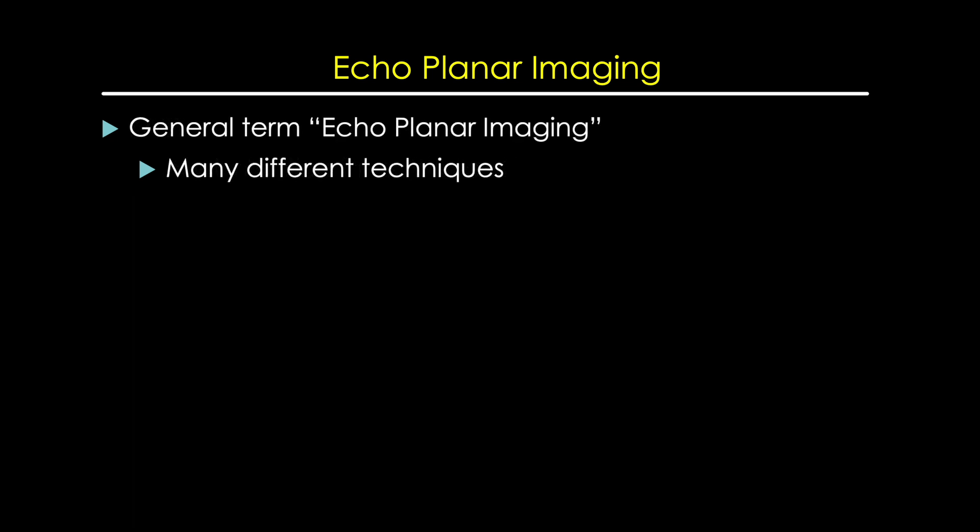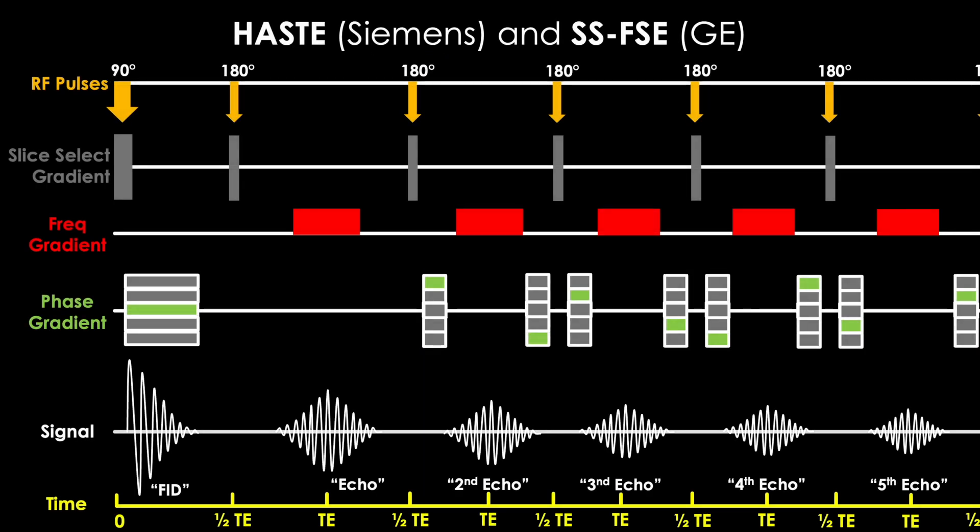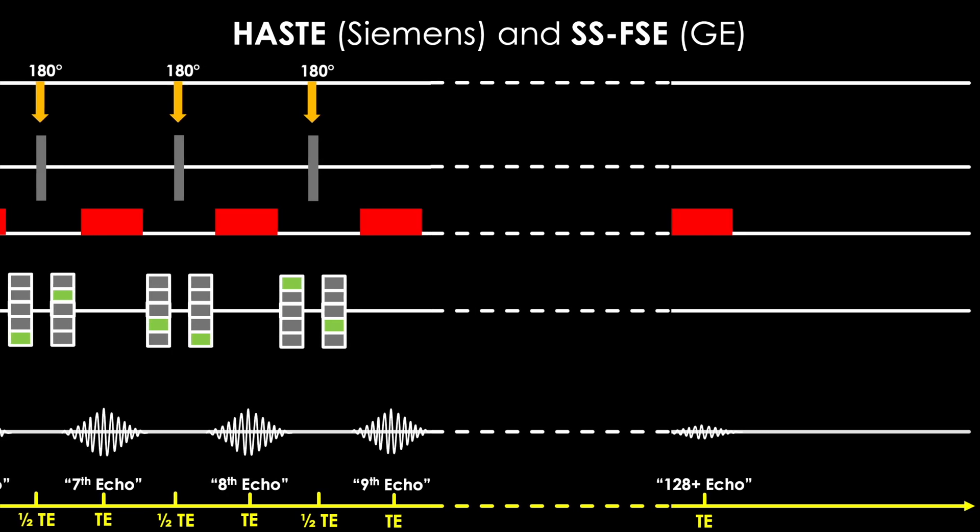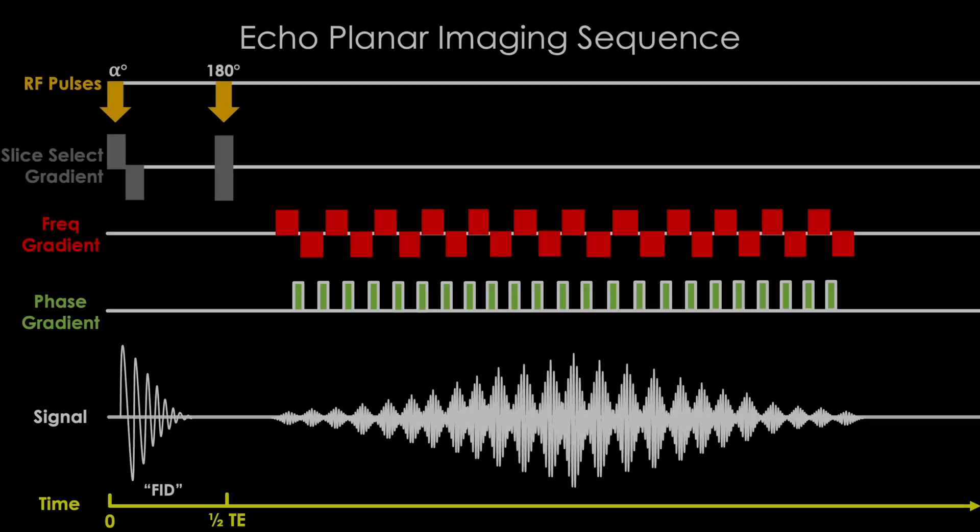And again, keep in mind that the term echoplanar imaging is a general term encompassing a family of super-fast sequences built around this backbone of mixed gradient recalled and spin echo techniques we formed in this lecture. And in fact, we already covered another echoplanar technique. That's right, our lecture on the haste and single shot fast spin echo sequence is a variation of this echoplanar technique that gives us a little more contrast than our usual echoplanar sequence at the cost of slightly lower speed. So we've done it. We've pioneered a blistering fast sequence that allows us to do incredible things such as see relative neuron activity and water movement within the brain.